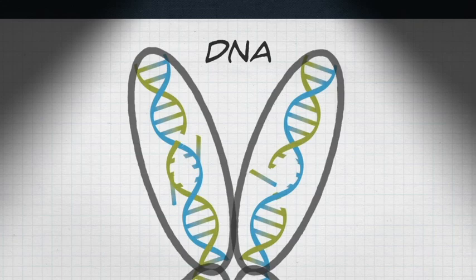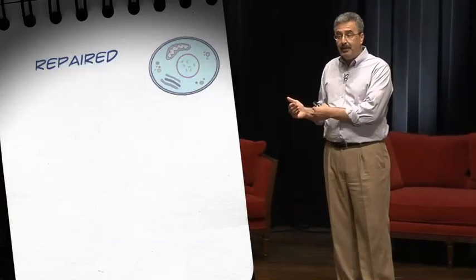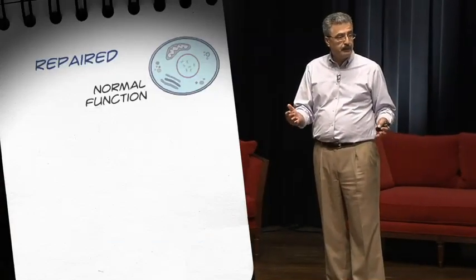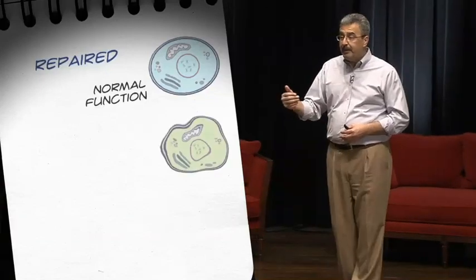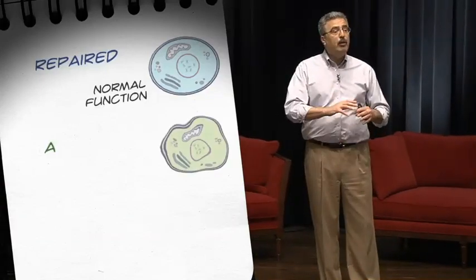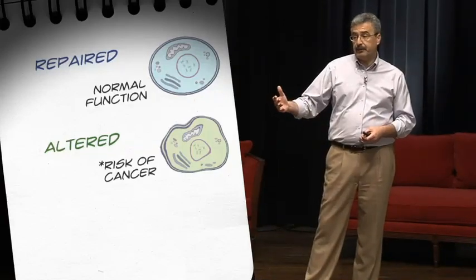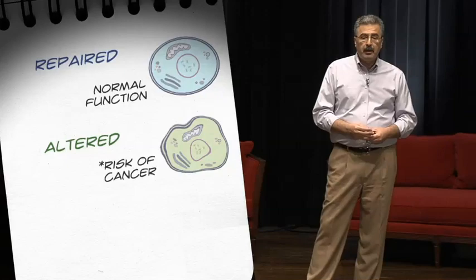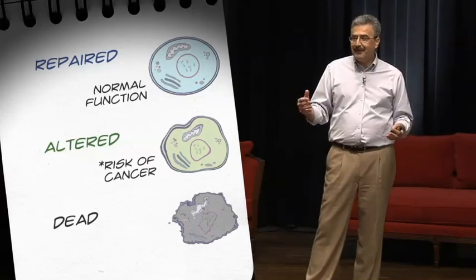Once a cell is irradiated and the DNA is damaged, there are three possible outcomes. First, it can repair itself faithfully to how it was before the damage — the cell is repaired and there's normal function. Second, it could misrepair — repair incorrectly — so the cell becomes an altered cell, with the potential to eventually turn into a cancerous cell. Alternatively, after the cell is damaged, the cell can die, so cell death is the outcome.